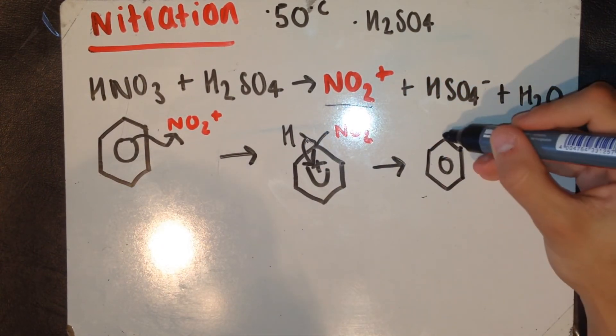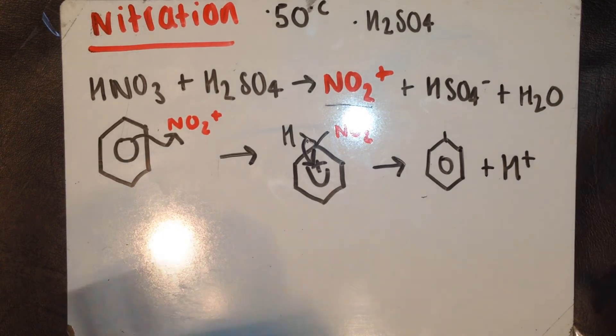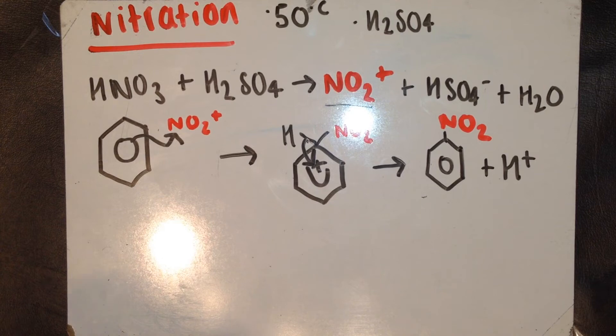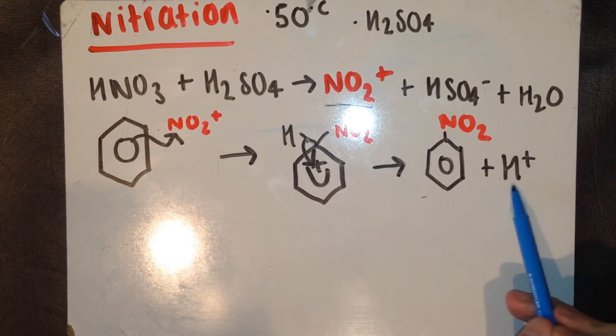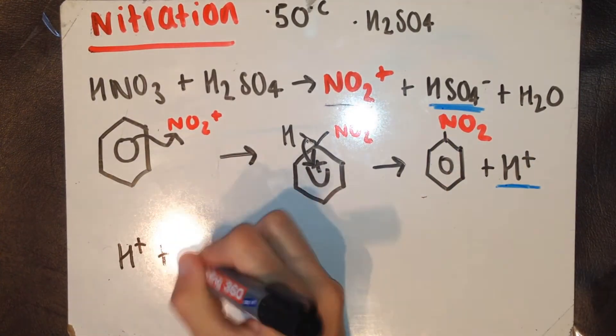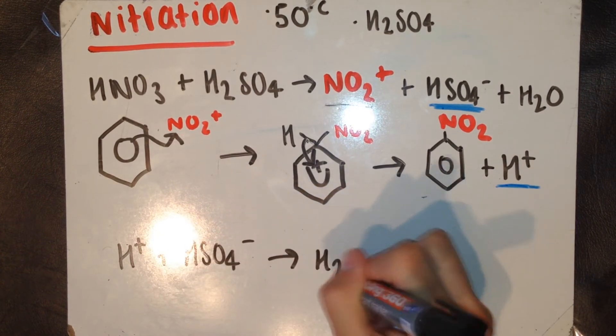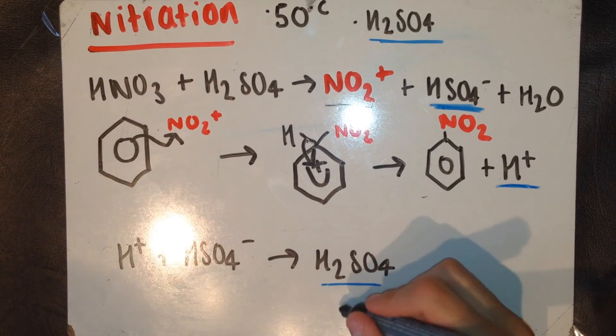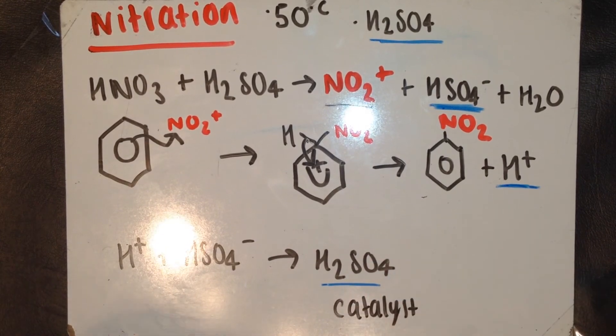As you can see, I've done the NO2 in red all the way along, so you can see the journey of the electrophile and how it happens. But, the mechanism isn't finished there, because we don't have our H2SO4 catalyst. Instead, we have an H+ ion left, and an HSO4- ion left. The H+ and the HSO4- join to form H2SO4. Our catalyst is regenerated.